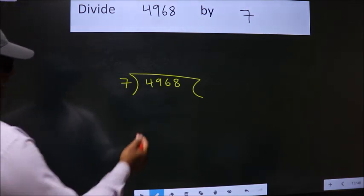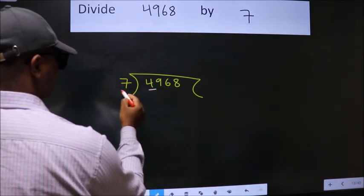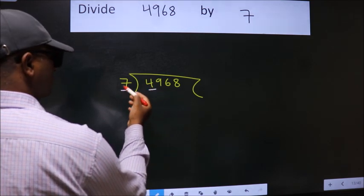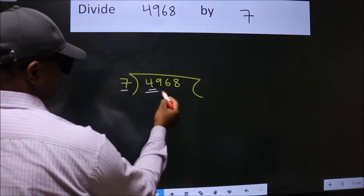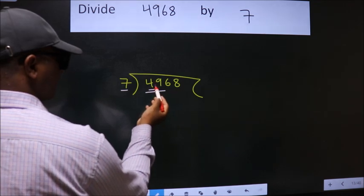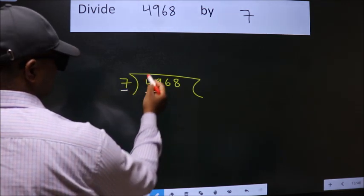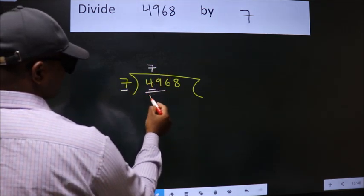Next. Here we have 4, here 7. 4 is smaller than 7, so we should take 2 numbers: 49. When do we get 49 in the 7 table? 7 sevens is 49.